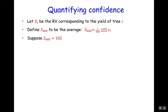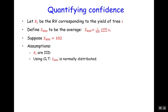Suppose this average is 102 — a little bit higher than the 100 average we saw before. Our assumptions are that the trees are independent and identically distributed, so we can treat their sum as approximately normally distributed because of the central limit theorem.